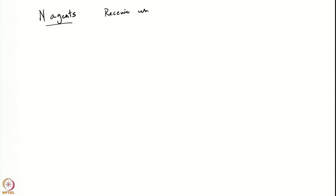Here therefore is the intrinsic model of stochastic control. The model is as follows: we will assume we have N agents. This model concerns information structures, and there is no loss of generality in starting by assuming we have N agents instead of one agent. These N agents receive information — agent i receives information y_i^t at time t.